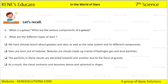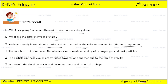Before that, we have already studied what is the galaxy, what are the various components, and what are the different types of stars. We know about galaxies, stars, the solar system and its different components. Now, the stars are born out of nebula. So what is nebula?